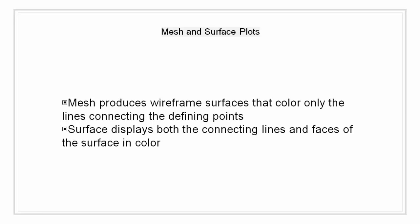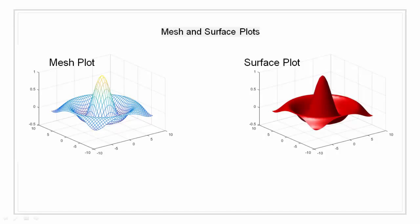Mesh produces wireframe surface that color only the lines connecting the defining points, whereas the surface displays both the connecting lines and the faces of the surface in color. MATLAB colors surface by mapping z data values to the indexes into figure color map. In short, the plot on the left is a wireframe diagram and is a mesh plot, whereas the plot on the right is a surface plot.